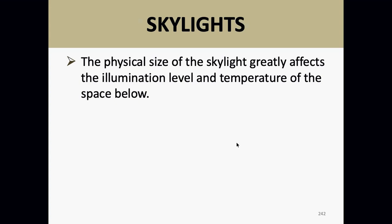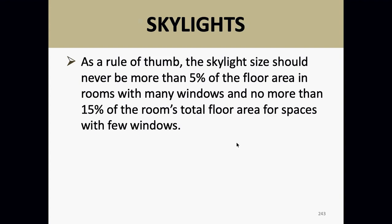When looking at skylight sizing, you should never have skylights exceed 5% of the floor area in rooms with a lot of windows, and no more than 15% of the room's total floor area in spaces with few windows. Builders should not go crazy with skylights. If you start going over these numbers, the excessive solar load is going to make a really big difference with your air conditioning and heating.